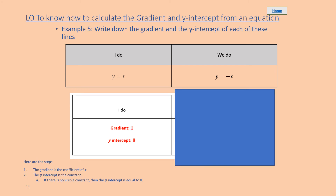Finally, let's have a go at example five: y equals x. So the gradient is one, because there's a one in front of the x — the coefficient is one. If there is no visible constant, then the y-intercept is equal to zero.